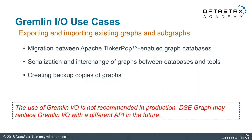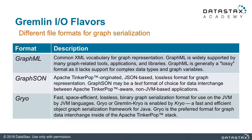Gremlin IO is not recommended for production use, as it may be replaced with a different API in the future. The main file formats for graph serialization with Gremlin IO include GraphML, a commonly used XML-like format accepted by a wide variety of graph tools, applications, and libraries — though GraphML is generally a lossy format as it lacks support for complex data types.